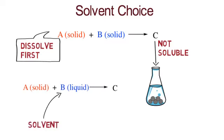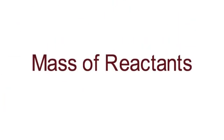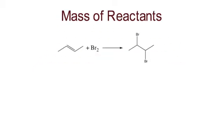The second question is how much of the reactants to use. The first step is to determine the balanced equation. Reactants need to be in their stoichiometric amount for the reaction to proceed. For example, let's look at bromination of this alkene. The balanced equation tells us that the ratio of alkene to bromine should be one to one. So, we need to calculate the mass of reactants needed based on this balanced equation.